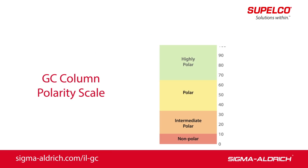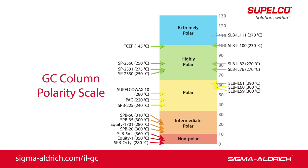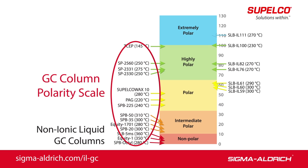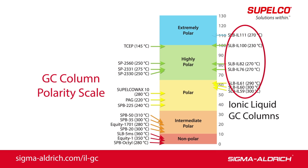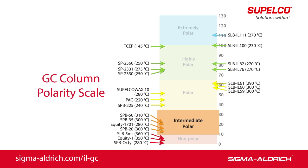The GC column polarity scale illustrates the relative polarities of various column phases to one another. To the left of the scale are the positions and maximum temperatures of several non-ionic liquid columns. To the right of the scale are the positions and maximum temperatures of current Sepelco ionic liquid columns. We expect ionic liquid columns will be introduced into the intermediate polar region.